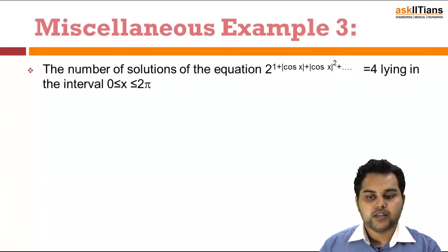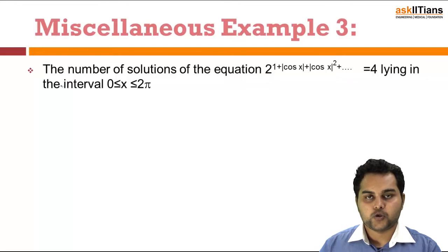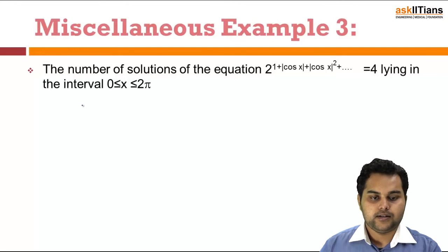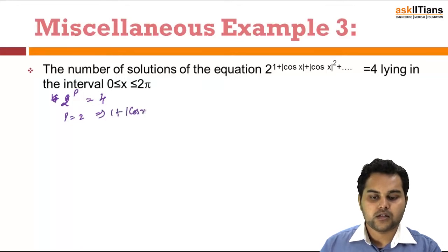The next problem is: find the number of solutions of 1 + |cos x| + |cos x|² + |cos x|³ + ... (up to infinity) = 4 lying in the interval (0, 2π). Let the whole expression equal p = 4, so p = 2², meaning 1 + |cos x| + |cos x|² + ... = 2.